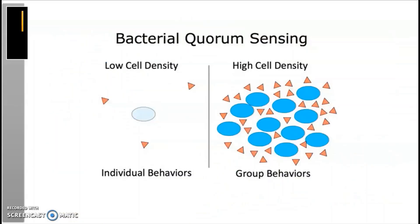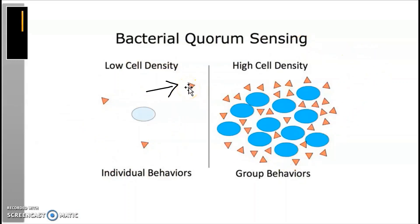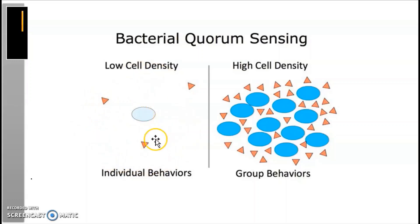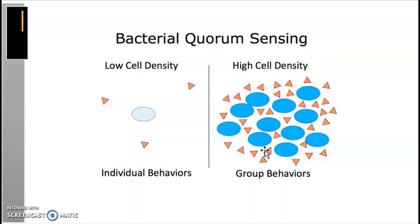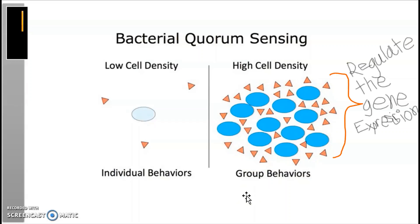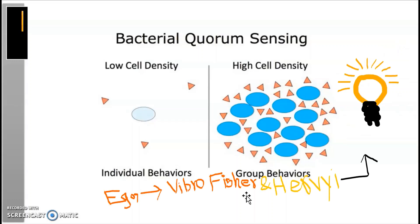Here is the mechanism of quorum sensing in bacteria in the simplest way. There is a low cell density area and a high cell density area. The little red triangles show the autoinducer. At low density the concentration of autoinducer is low, and at high density both cell and autoinducer concentrations are high. As cells grow and population density increases, bacteria release molecules into the environment. When more cells are present, more molecules accumulate until they reach a threshold level, which then regulates gene expression.